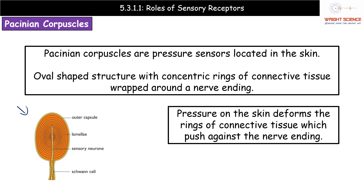When we apply pressure to the skin, it essentially squishes the Pacinian corpuscle. The pressure deforms those rings of connective tissue, and as those rings deform and change their shape, they push against the nerve ending located at the centre.